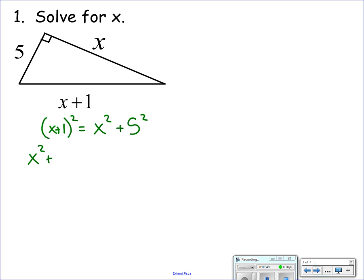X plus one squared: square the first term, one times X times two, squaring five, that's 25. If I subtract X squared from both sides, the X squareds go away. So I have 2X plus one equals 25. If I subtract one from both sides, X is gonna be equal to 12.